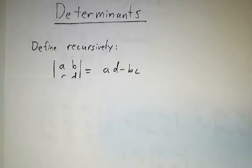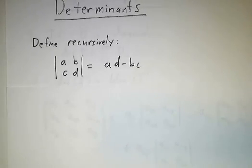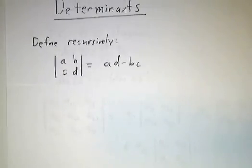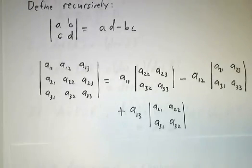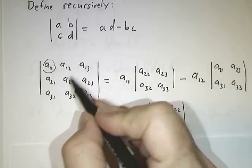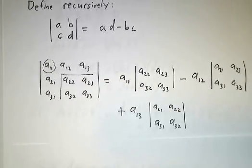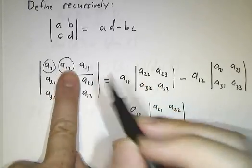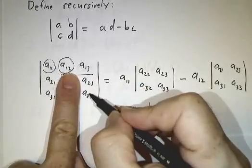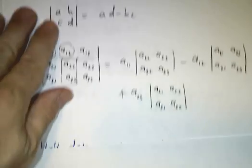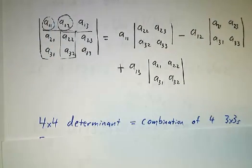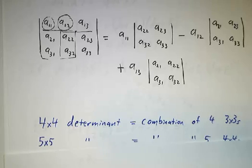The next thing we're going to use is determinants. The determinant of a 2x2 matrix is given by AD minus BC. Determinants of bigger matrices are defined recursively. If you have a 3x3 matrix, you take this entry times this 2x2 determinant, minus this entry times this 2x2 determinant, plus this entry times this 2x2 determinant.